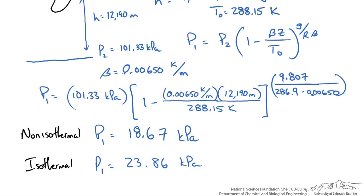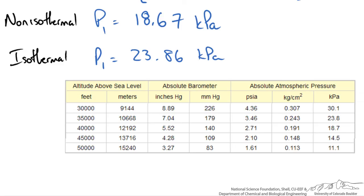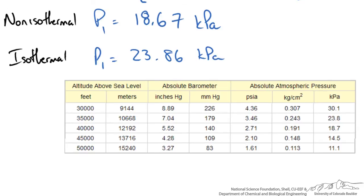So if we look at a table of the altitude versus the absolute atmospheric pressure, you will see that that reported at least here on engineeringtoolbox.com for 40,000 feet is 18.7 kPa, which is basically what we calculated for our non-isothermal case.